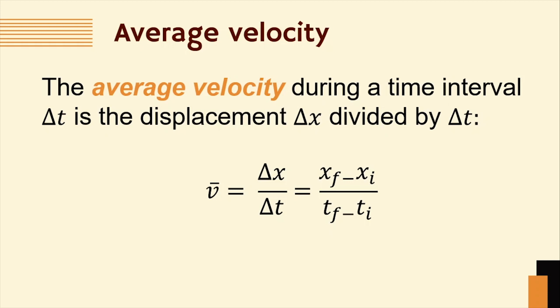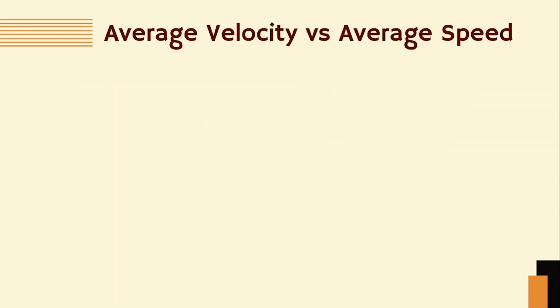It is also equivalent to final position minus initial position divided by final time minus initial time. To denote the average velocity, we are using a small letter v with a bar above it. Let us now differentiate average velocity and average speed.